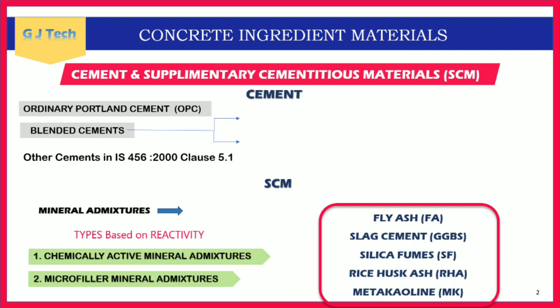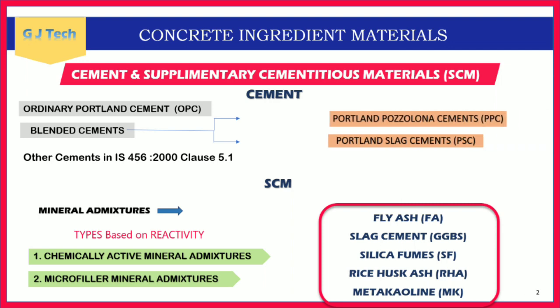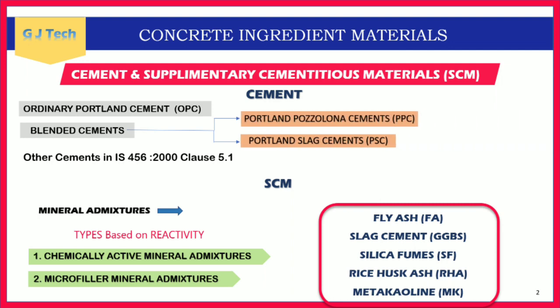There are two kinds of blended cements: Portland Pozzolana Cement (PPC) and Portland Slag Cement (PSC). These blended cements are manufactured by mixing dry clinker of portland cement with pozzolana materials or slag materials. A notable point is that in Portland Slag Cement, the slag material contributes up to 60 percent of the weight. Pozzolana and slag materials include fly ash, slag cement, silica fumes, rice husk ash, and metakaolin.